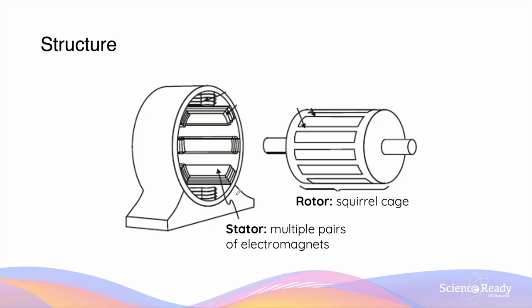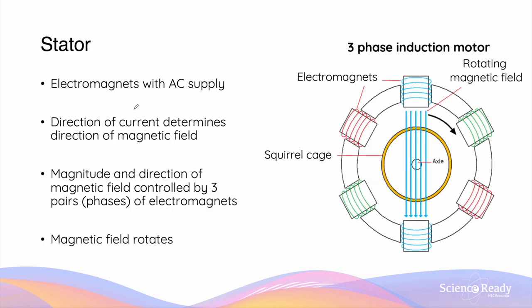The structure of an AC induction motor can be separated into two main parts: the stator and the rotor. The stator consists of electromagnets which produce magnetic fields, while the rotor — also referred to as a squirrel cage — is the component that rotates when electrical energy is transformed into mechanical energy. The stator consists of electromagnets connected to an AC power supply, and a typical AC induction motor consists of three pairs of electromagnets. These motors are often called three-phase induction motors.